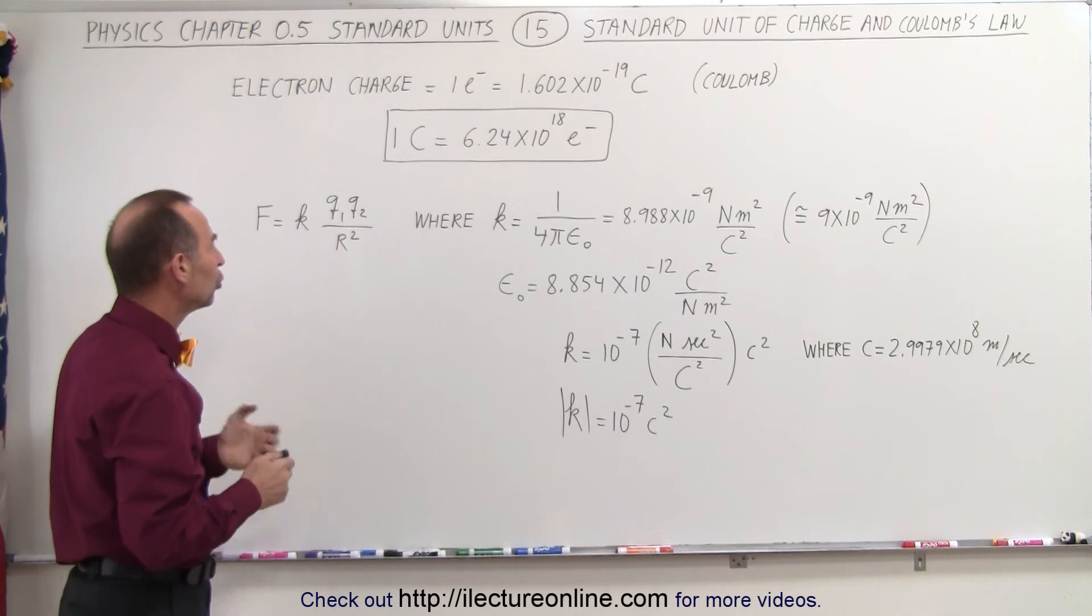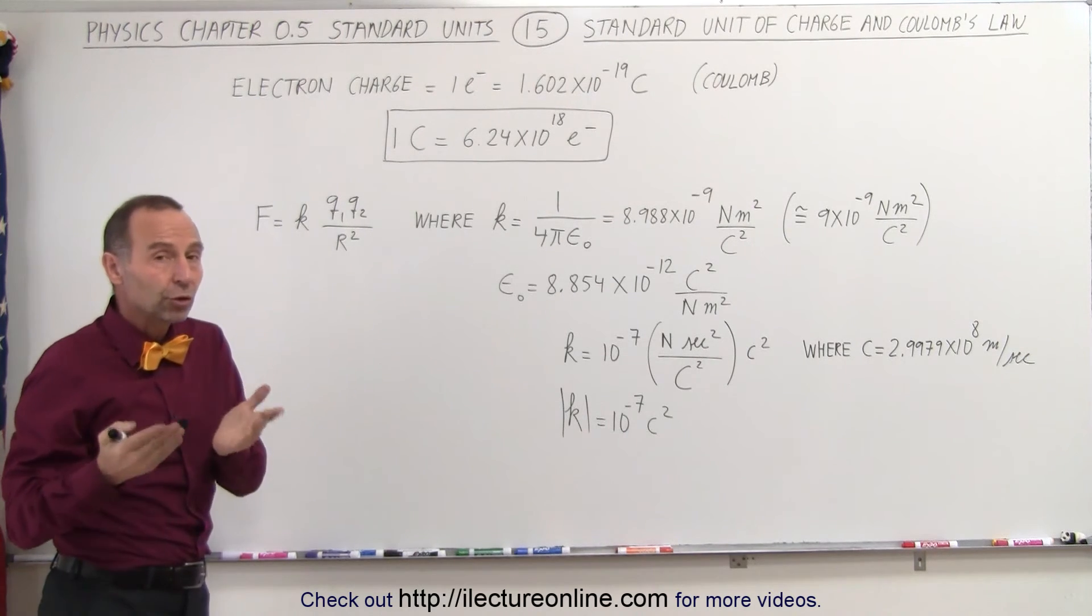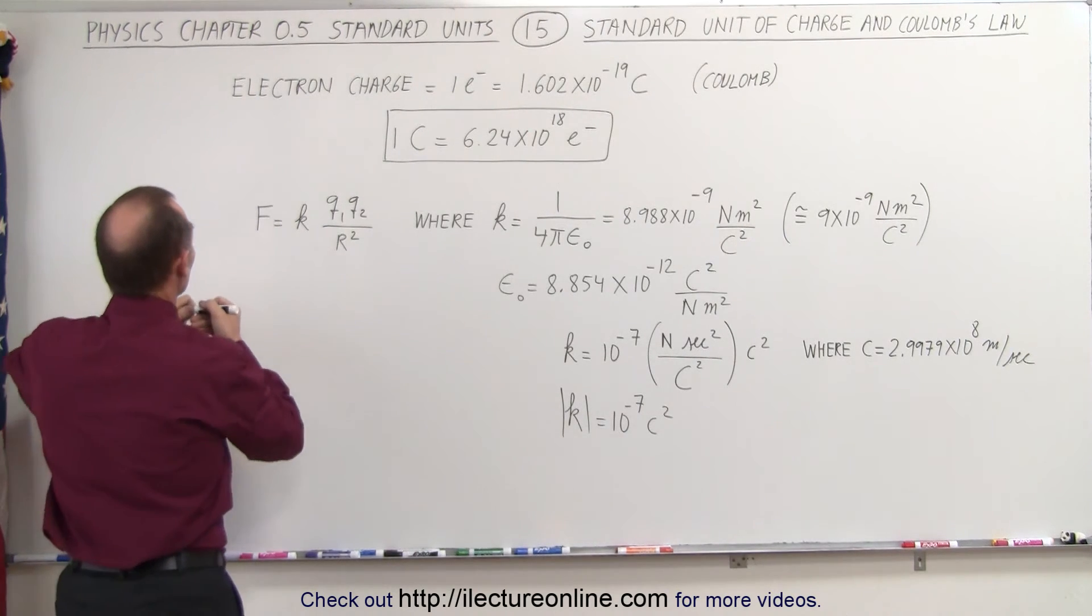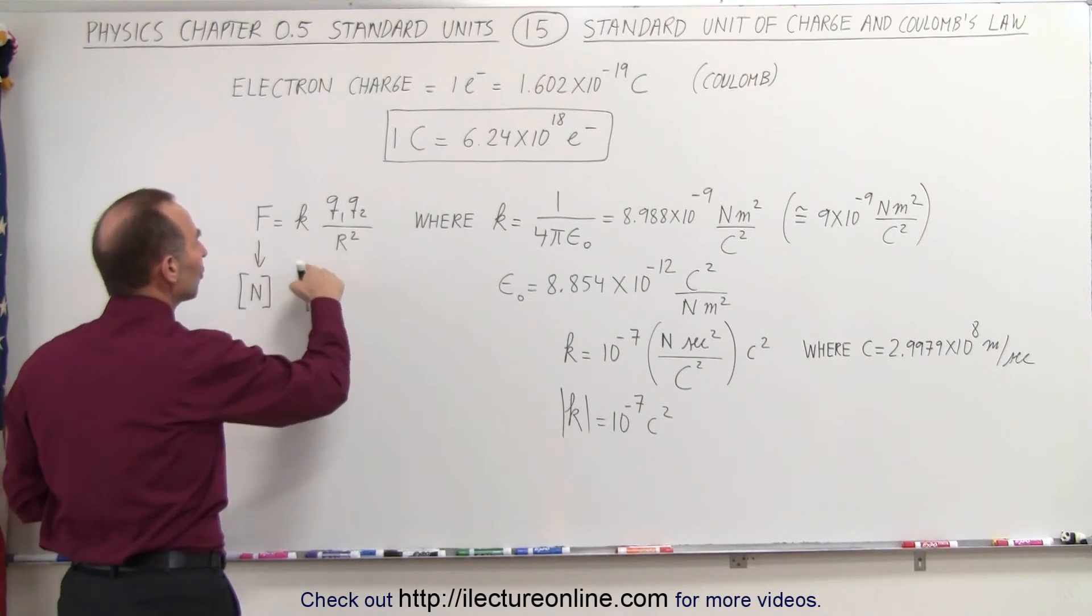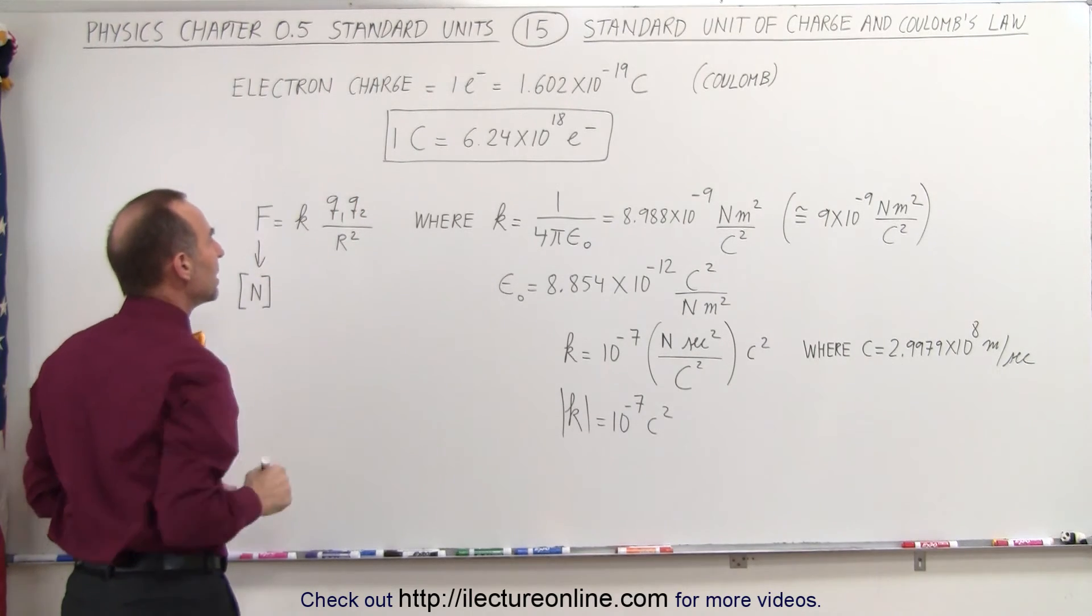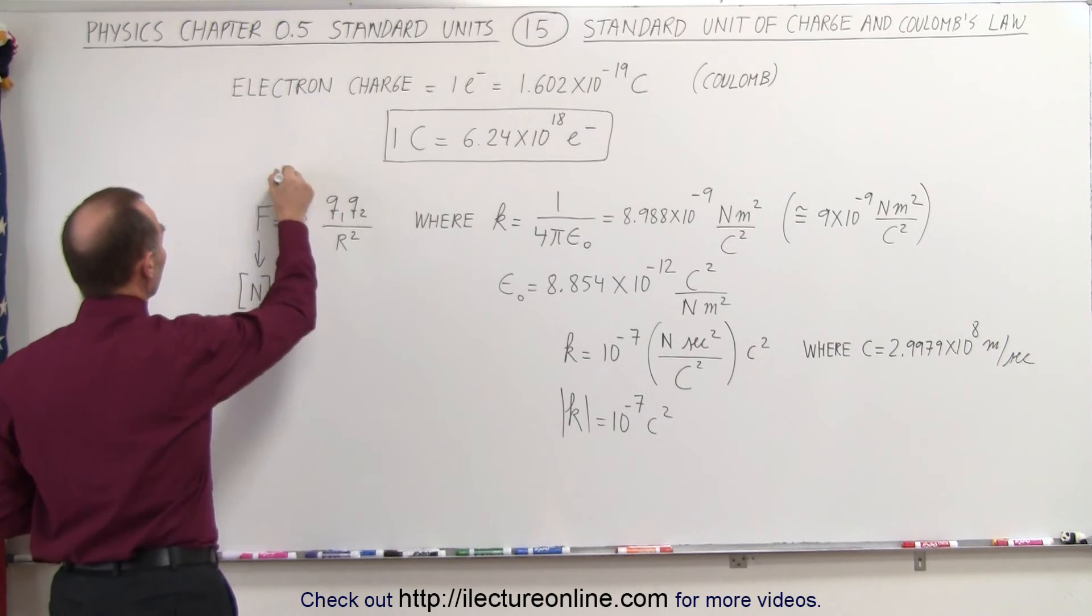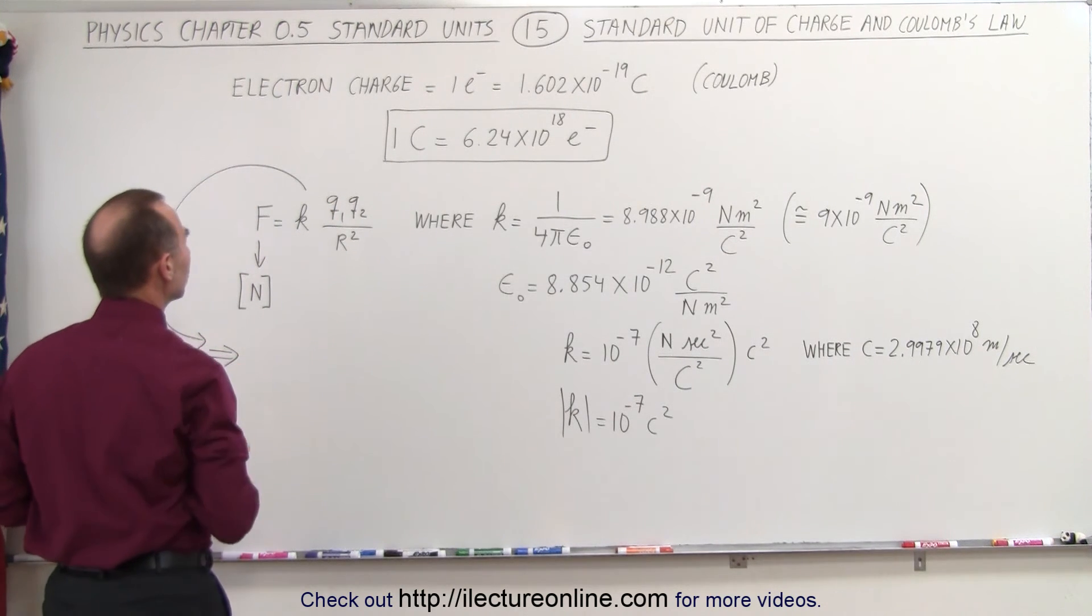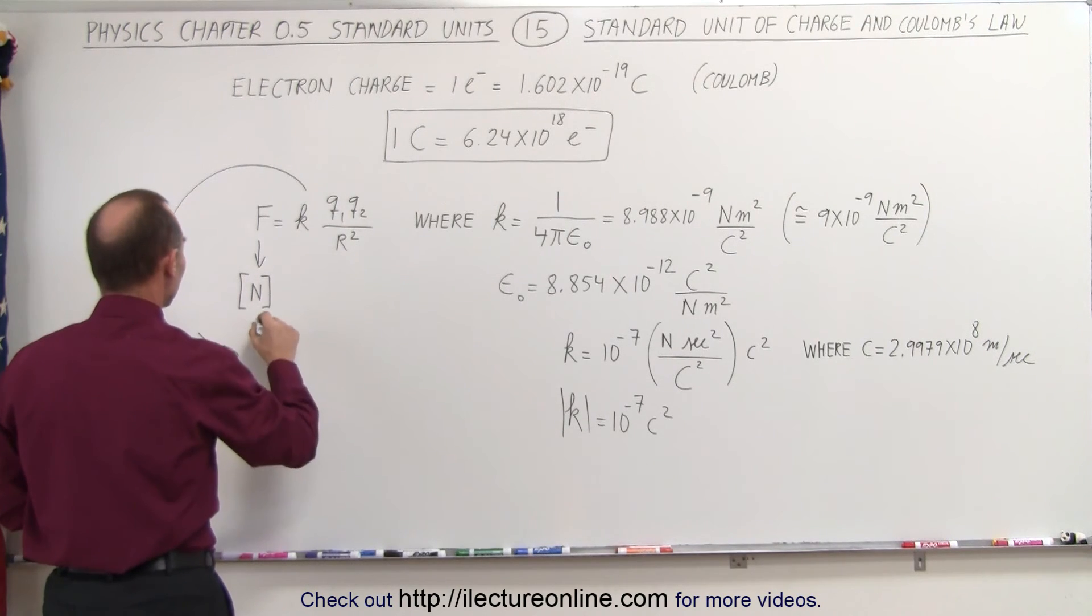Now, let's go back to our Coulomb's law equation. On the left side, we have force, and we know the units of force are equal to newtons. So this will give us the units of newtons, which means we have to give the proper units for K, so that the right side would also be in terms of newtons. Let's find out.